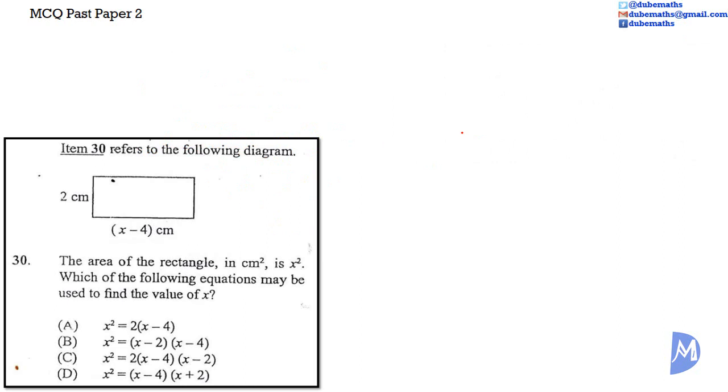Item 30 refers to the following diagram. We have a rectangle with a width or breadth of 2 centimeters and a length of x minus 4 centimeters.